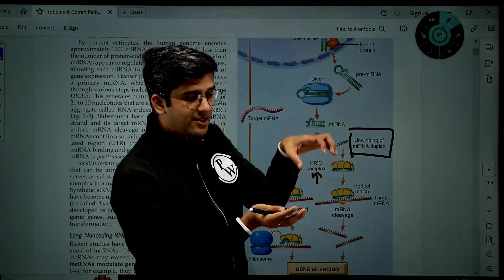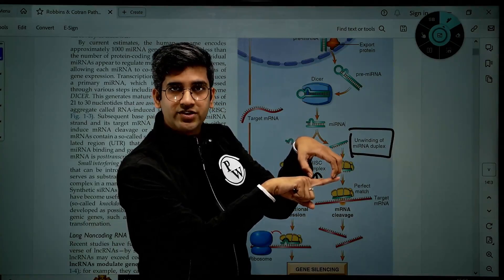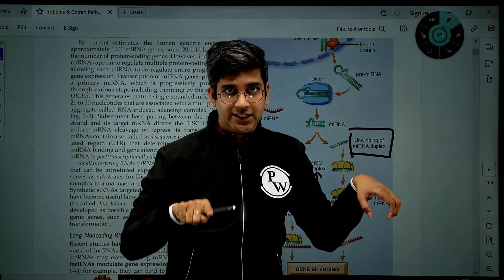Now the RISC complex has a protein with a single-strand DNA sequence. mRNA or the messenger RNA is already a single-strand sequence.